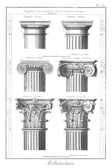Buttress: vertical member projecting from a wall to stabilize it or to resist the lateral thrust of an arch, roof, or vault. A flying buttress transmits the thrust to a heavy abutment by means of an arch or half arch.